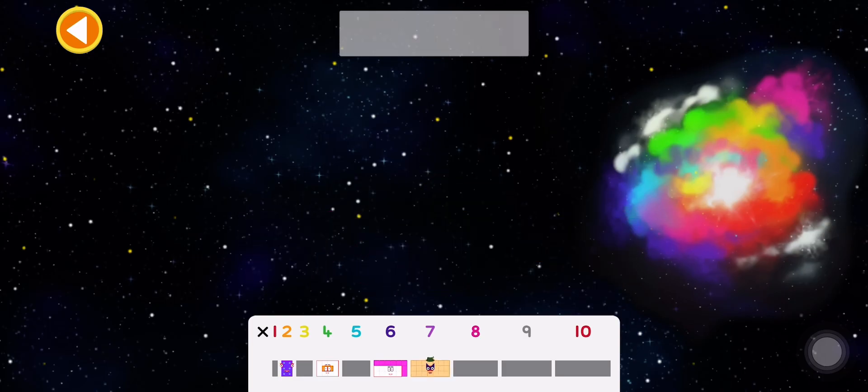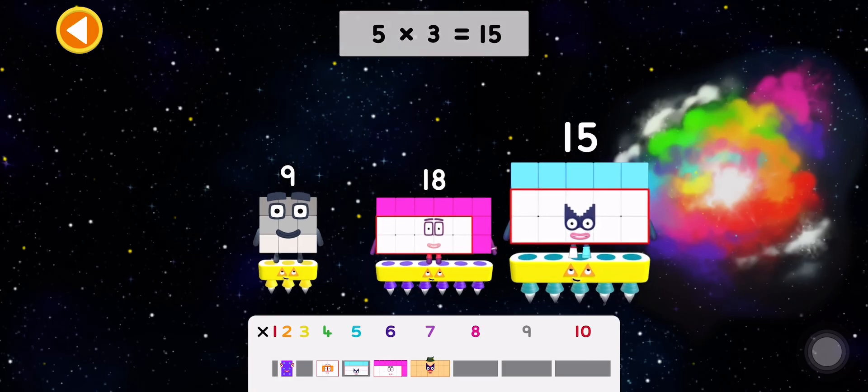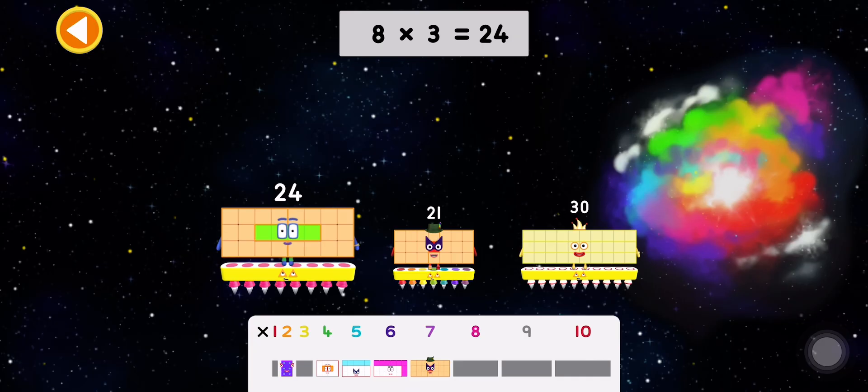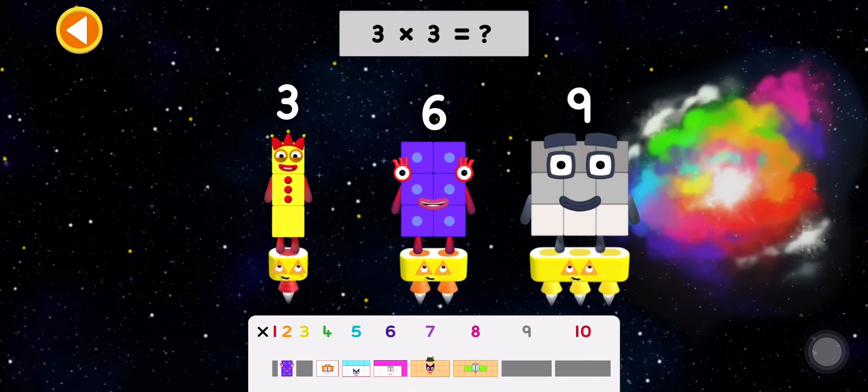Twenty-one. Five times three equals what? Fifteen. Eight times three equals what? Twenty-four. Three times three equals what?